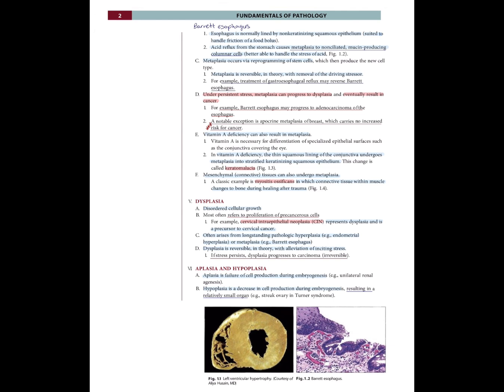Aplasia and Hypoplasia: Aplasia is failure of cell production during embryogenesis — for example, unilateral renal agenesis. Hypoplasia is a decrease in cell production during embryogenesis, resulting in a relatively small organ — for example, streak ovary in Turner syndrome.